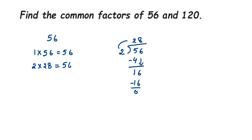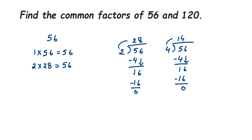Next we check 4 — it goes in the 4 times table. If you don't know by which number, divide 56 by 4: working it out gives us 4 × 14 = 56. The next number is 5 — it doesn't go in the 5 times table, and neither does it go in the 6 times table.